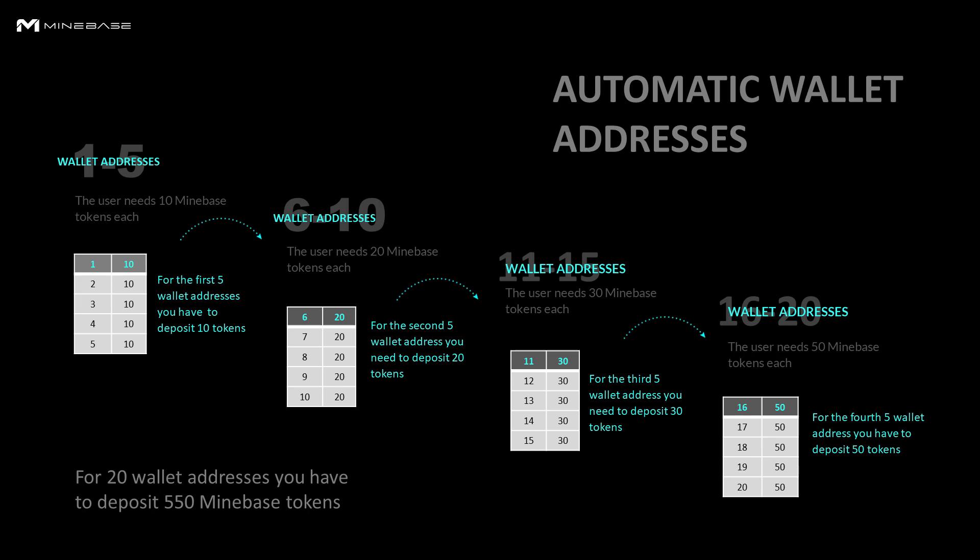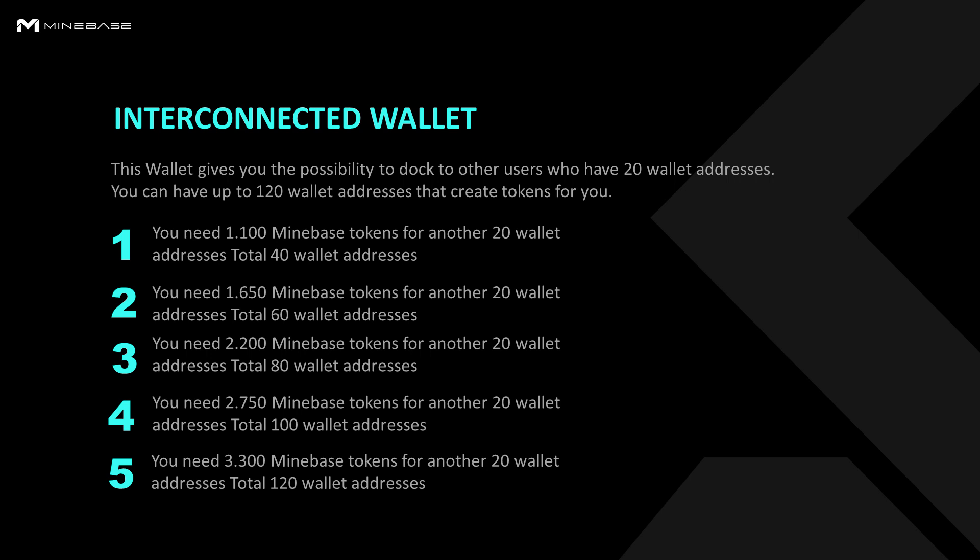You can use our interconnected wallet. For each interconnected wallet, you need an additional 550 tokens. The first 550 tokens give you your first 20 wallet addresses. If you add another 550 tokens, you can use one interconnected wallet.